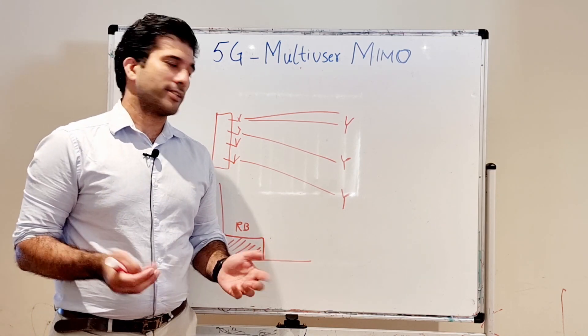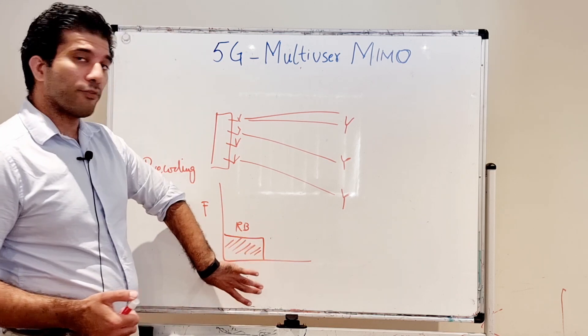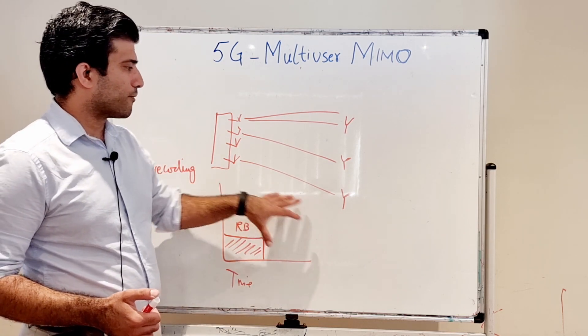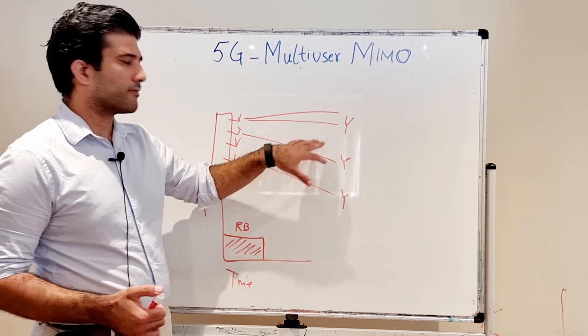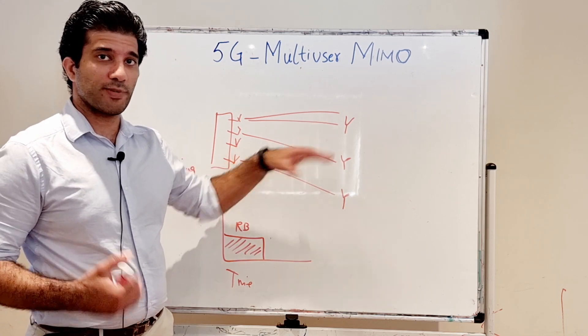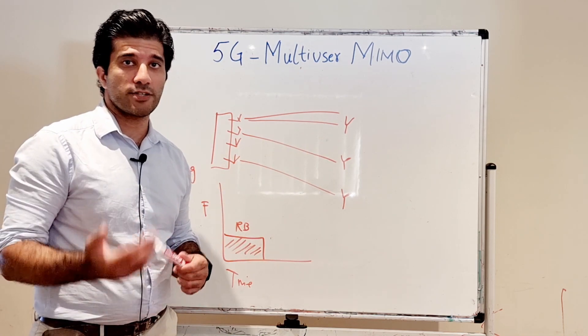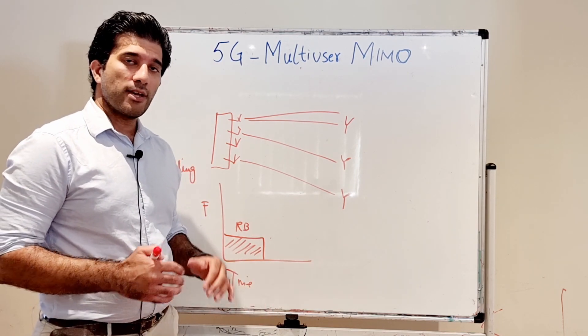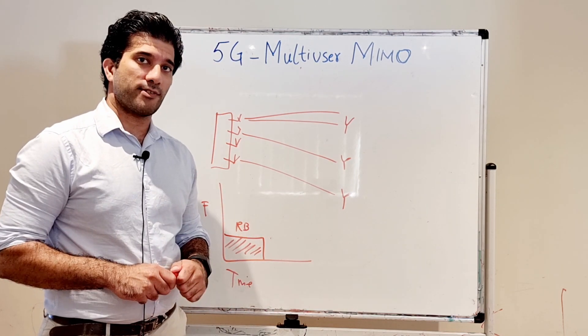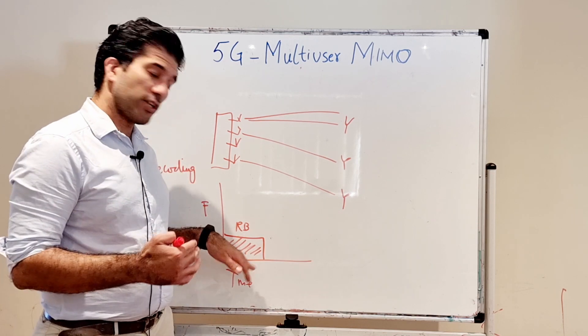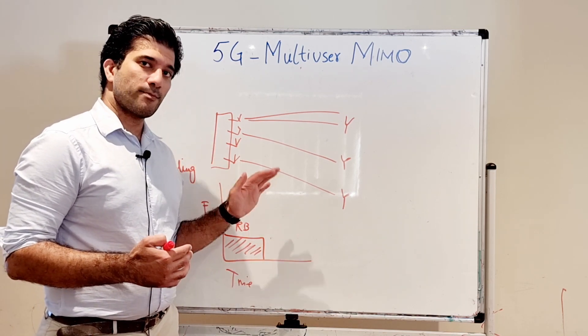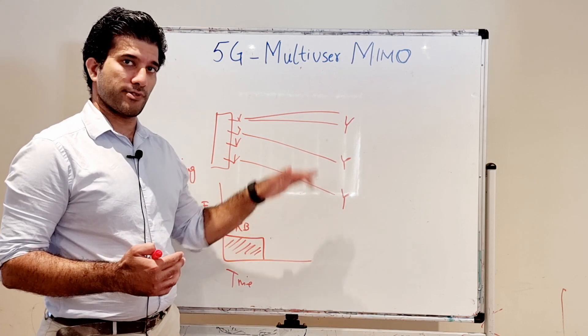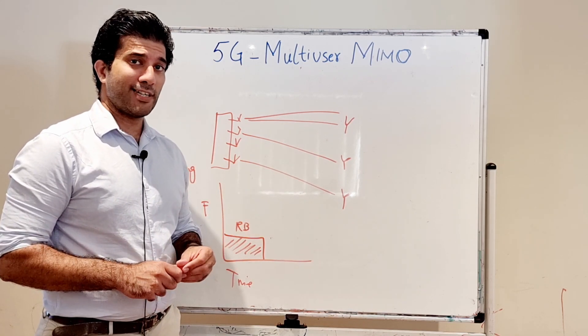You are using this whole resource with this beam, this beam, and this beam. Basically you are improving your spectral efficiency by four in this particular scenario by using the concept of multiuser MIMO. You can use the same frequency-time resource to transmit data to multiple users, and this is your multiuser MIMO.